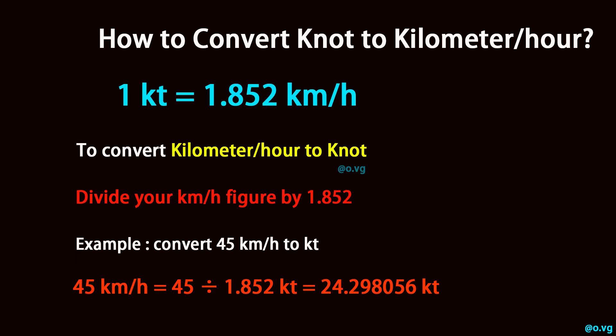To convert Kilometers Per Hour to Knots, divide your Kilometers Per Hour figure by 1.852. For example, convert 45 Kilometers Per Hour to Knots: 45 divided by 1.852 equals 24.298056 knots.